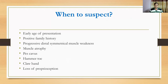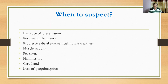Hereditary neuropathies transmit by different patterns — some by autosomal dominant, some by autosomal recessive, and some by X-linked manner. So if there is any positive family history, we have to think of hereditary neuropathies, though 30 percent of hereditary neuropathies occur because of de novo mutation.